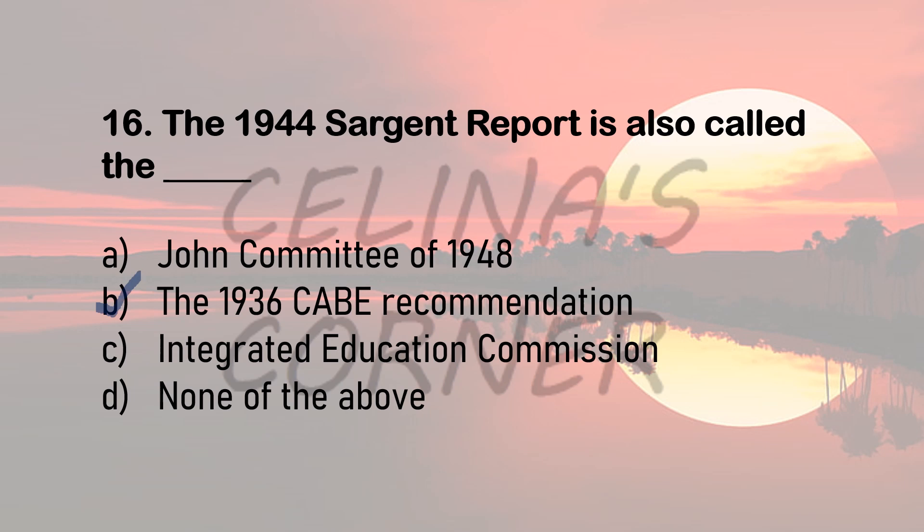The full form of CABE is the Central Advisory Board of Education. John Sargent, who was the British Chief Educational Advisor, wrote this report because he observed that the Indian government had not done much for the education of the disabled. He thought of informing the government and making sure that something could be done about it. Hence this report was produced, and since his name is John Sargent, it is also known as the Sargent Report.